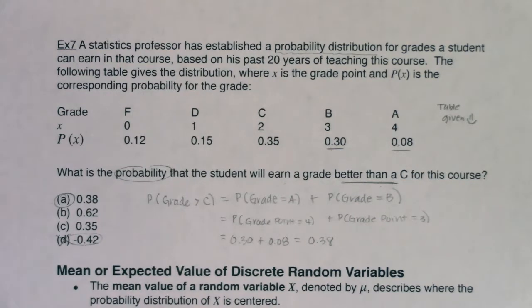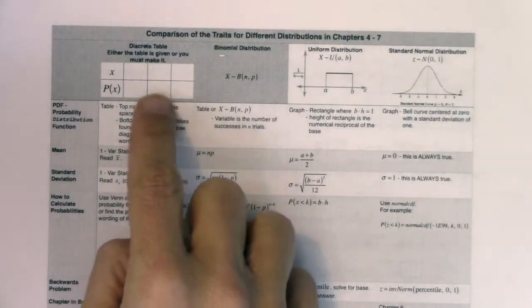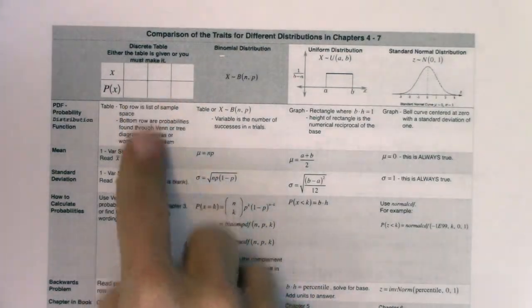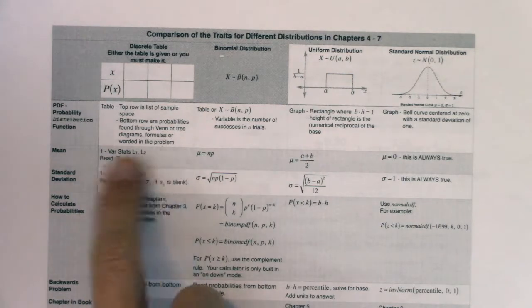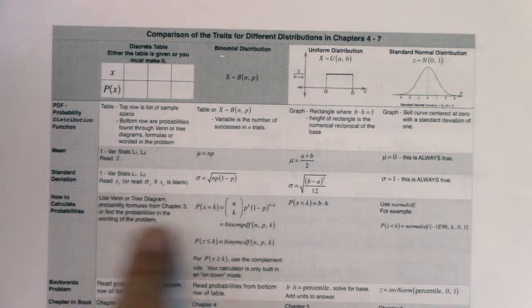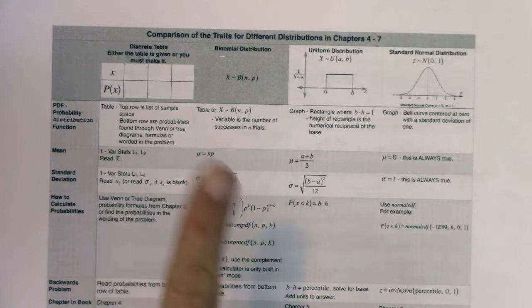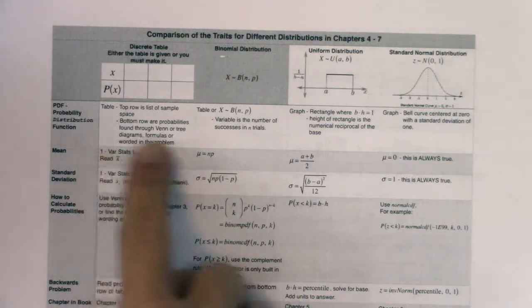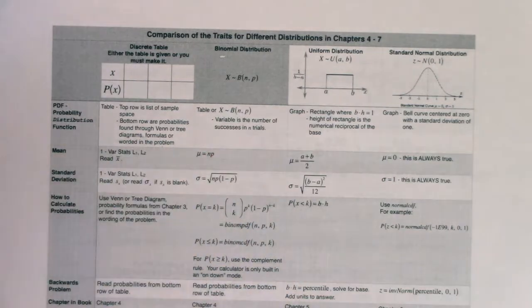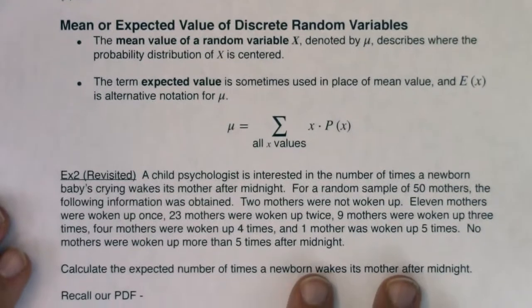So, with that under our belt, we're going to move into the next part where we start to talk about means and expected values. If we refer back to that trait table, we're just going down the column. We did the PDF first, now we're hitting means.